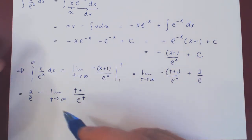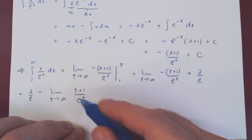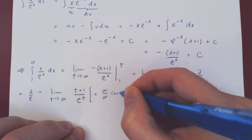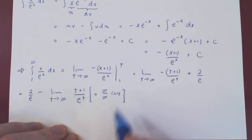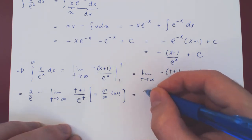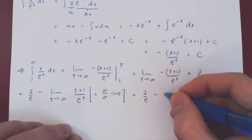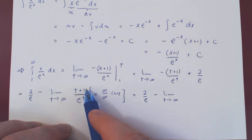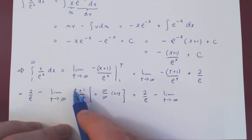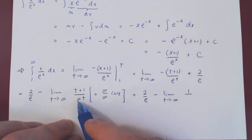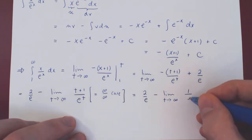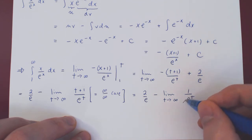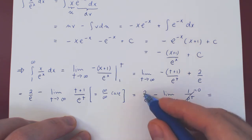This is not a trivial limit — as t goes to infinity, t plus 1 goes to infinity and e to the t goes to infinity, so we have an infinity over infinity case. This can be handled with L'Hôpital's rule. The derivative of t plus 1 is 1, and the derivative of e to the t is e to the t, giving us 1 over e to the t. As t goes to infinity, this is a 1 over infinity case, which gives 0. So in the end we are left with simply 2 over e.